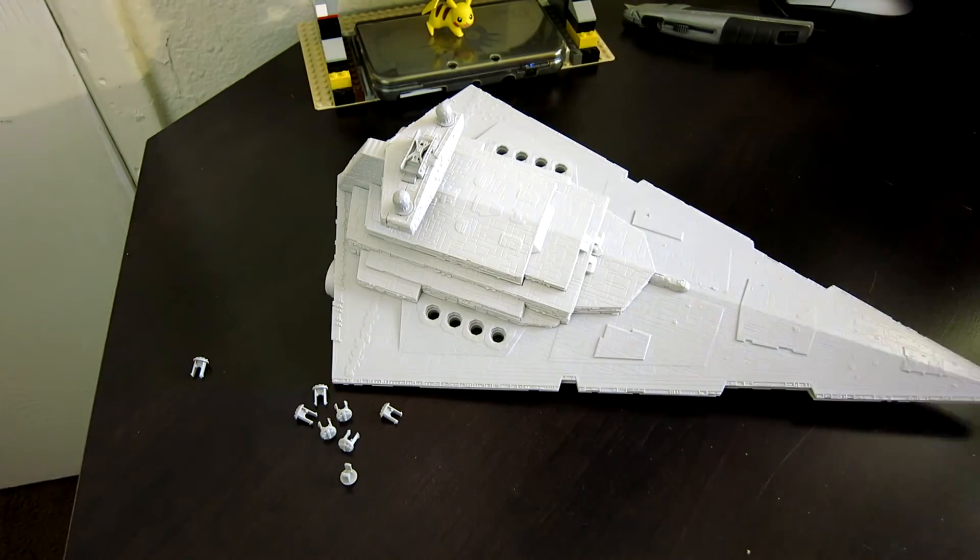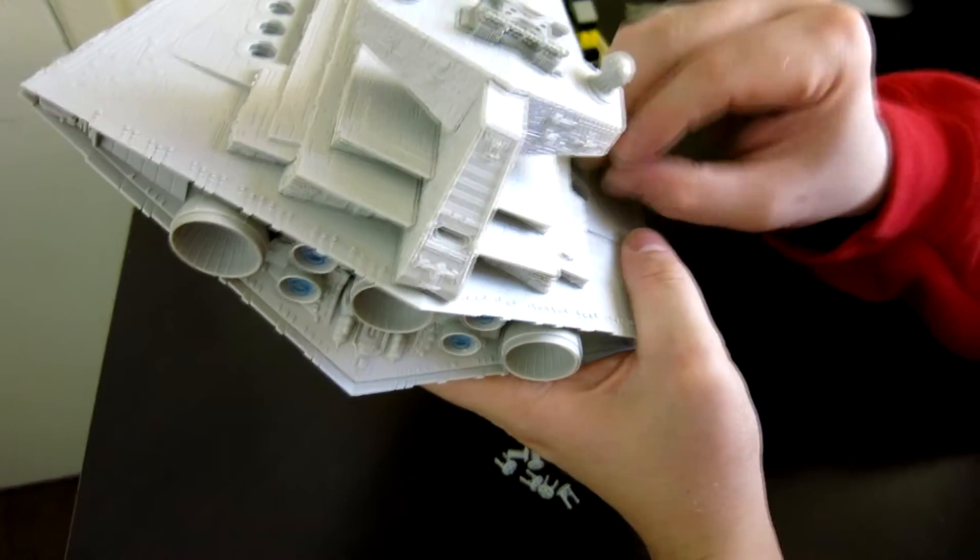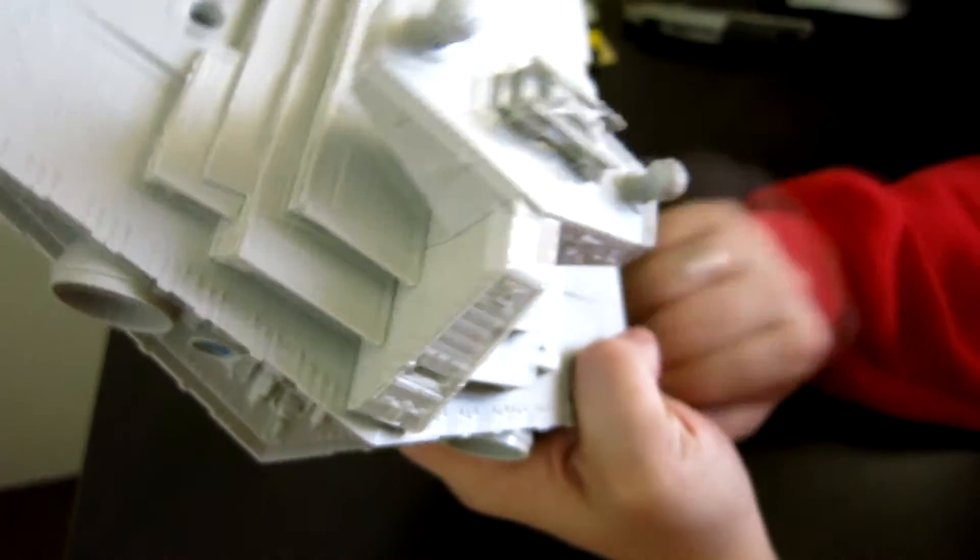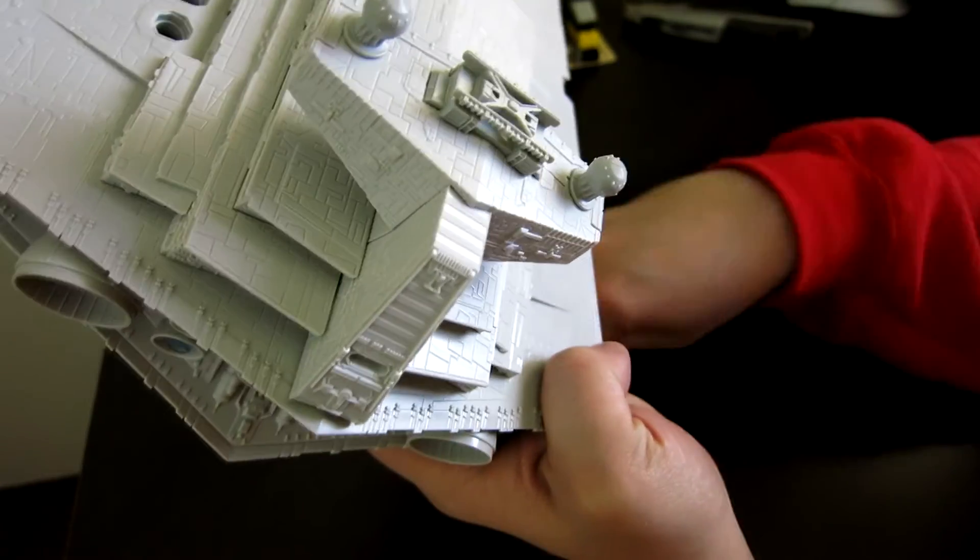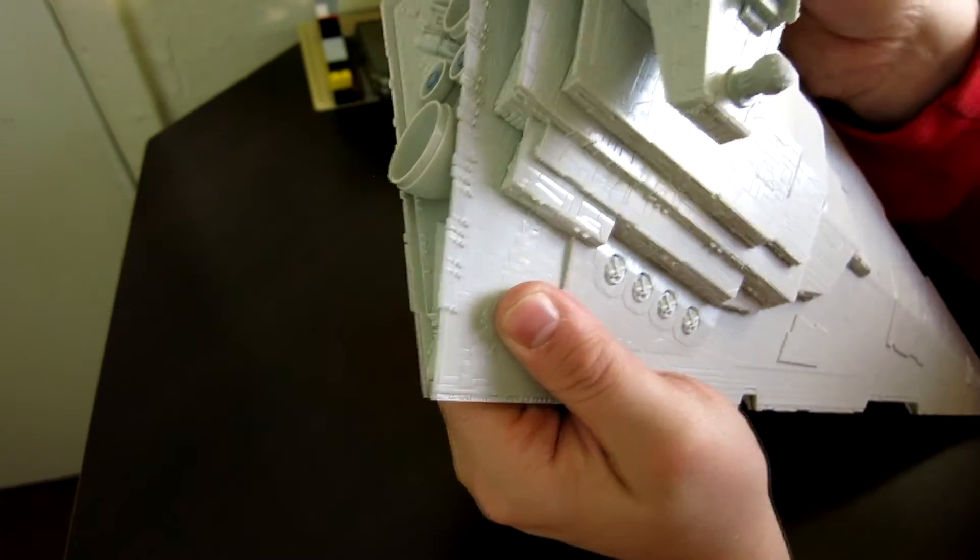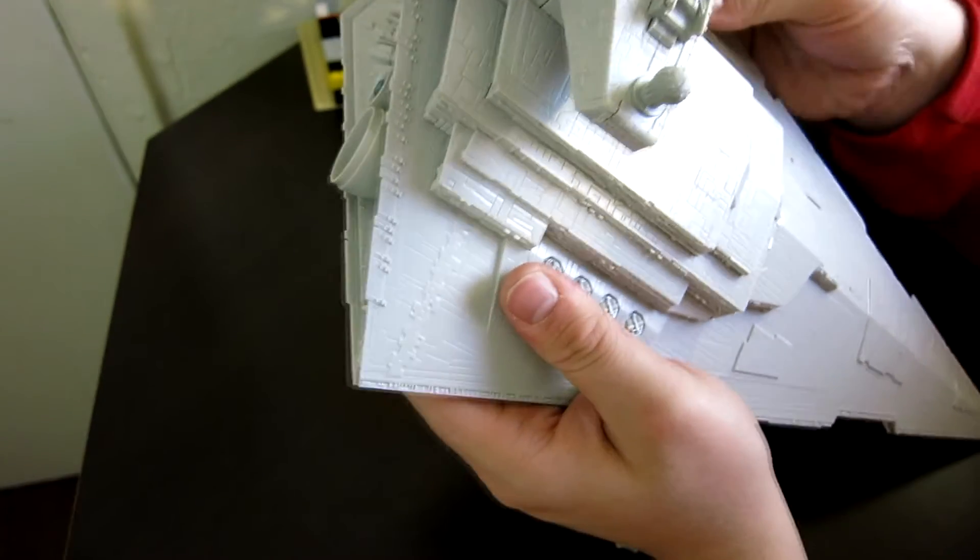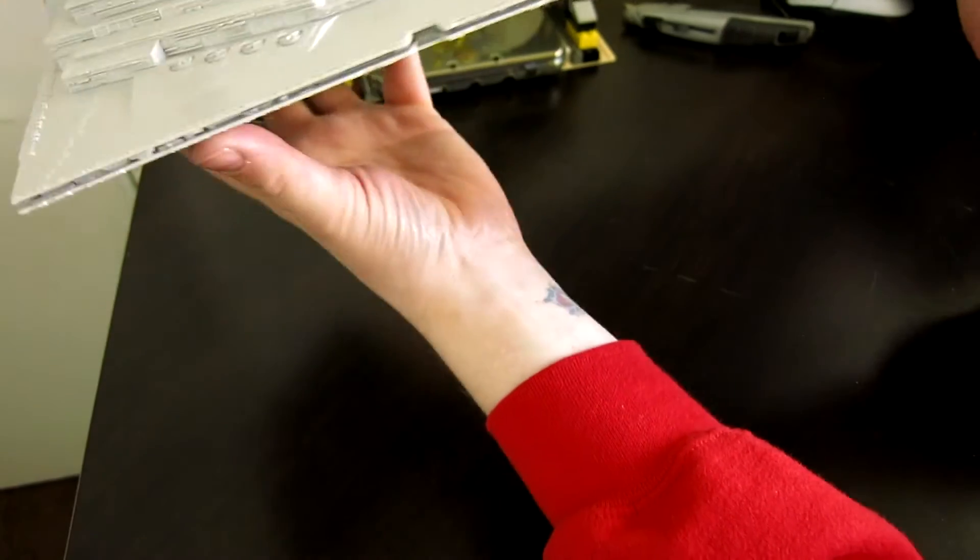And then now we actually get to do the turrets. So there's eight of these. They are turnable, but if you can tell by the fact that they're super flat on top, there's no way to turn them aside from just putting your whole finger on top of it. So, turbolasers. All right, that's basically it. Now you've got your poseable turrets and the entirety of the Star Destroyer. So I'm going to turn the camera around and we'll take another look at this thing all complete. Be right back.